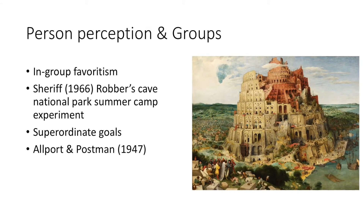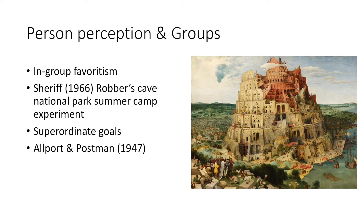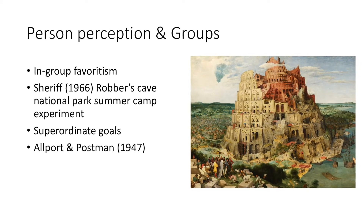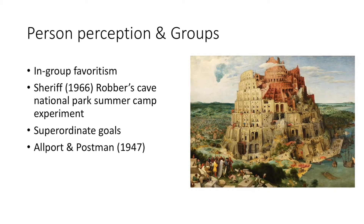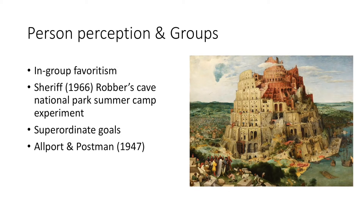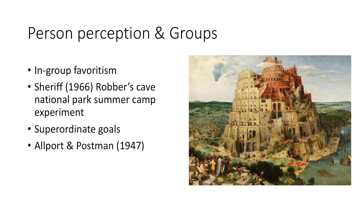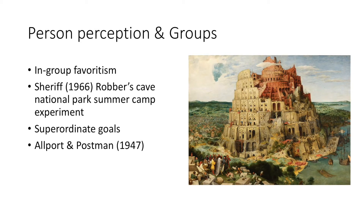Allport and Postman in 1947 stated that people given a picture of a white man holding a razor who was talking to a Black person — after 67 reiterations of the story, the razor changed from being in the white man's hand to the Black man's hand, as subjects were told to share what they had heard. This is an effect of saliency, stereotyping, and in-group favoritism.